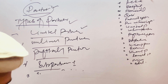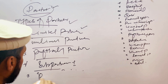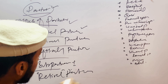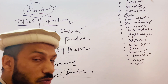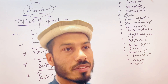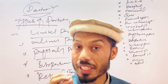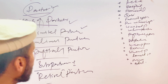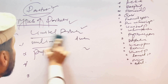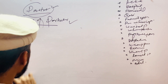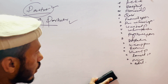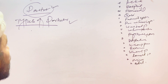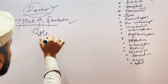The next type is the retired partner. Retired partners are those who have retired from the actual operations of the business. This type of partner is called a retired partner.